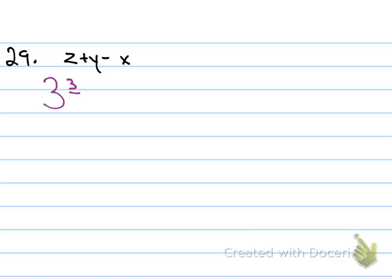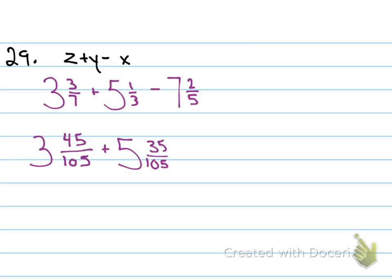So we substitute. Now, the LCD was kind of tough on this one. Did anybody find it? What's the LCD? 105. 105 is the LCD. You think, well, maybe 30, but no, 7 doesn't go into 30. And then you go up and you say, well, maybe 70, but then 3 doesn't go into 70. So you just have to keep going until you get to 105.